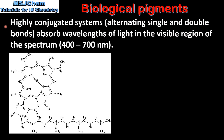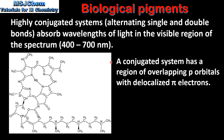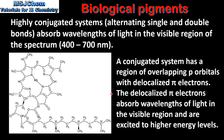Highly conjugated systems, which have alternating single and double bonds, absorb wavelengths of light in the visible region of the spectrum. Here we have the structural formula for chlorophyll. As you can see it's a highly conjugated system with alternating single and double bonds. A conjugated system has a region of overlapping p orbitals with delocalized pi electrons. The delocalized pi electrons absorb wavelengths of light in the visible region and are excited to higher energy levels.